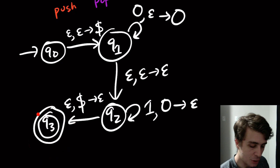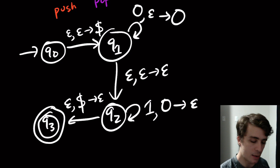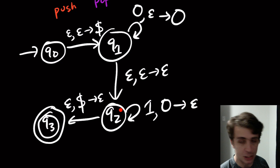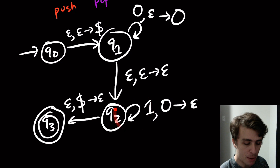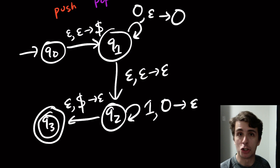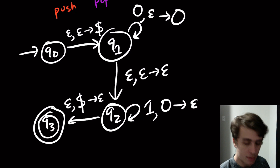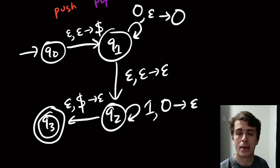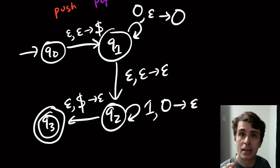For any string of the form 0^n 1^n: we come to q1 with the dollar sign on the stack, push on all the zeros, take the epsilon transition non-deterministically to q2, then pop off all the ones — they match the zeros exactly — leaving only the dollar sign on the stack. We then take the final transition and accept.